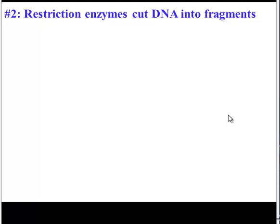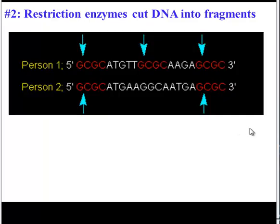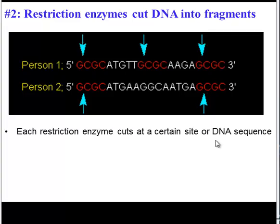Once you've got your DNA sample, it is then cut into fragments using special enzymes called restriction enzymes. Restriction enzymes are very specific. There are hundreds of different restriction enzymes out there and each one will cut at a particular restriction site or sequence of DNA. This particular restriction enzyme likes the sequence GCGC, and whenever it sees that sequence, it will cut the DNA.